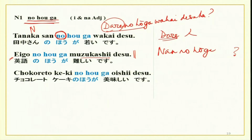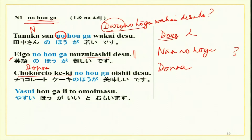Chokoreeto to keeki no hou ga oishii desu — chocolate cake is more delicious. Donna keeki no hou ga oishii desu ka — which type of cake is better? The answer: chokoreeto to keeki no hou ga oishii desu. Now with adjectives: yasui hou ga ii to omoimasu — I think something cheaper is better. Today I will only do i-adjectives because it is easy.